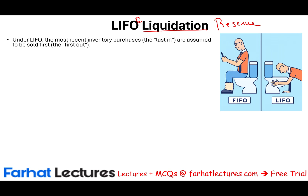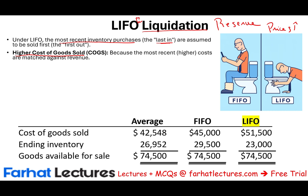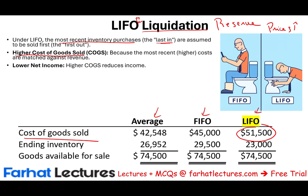LIFO stands for Last In First Out — it means the most recent inventory purchased, the last in, are assumed to be sold first. Assuming prices are rising, which we always take as the norm, you are going to have a higher cost of goods sold because recent prices are higher. That yields a lower net income. We worked this example with the average method, FIFO, and LIFO, and noticed that cost of goods sold under LIFO is the highest.